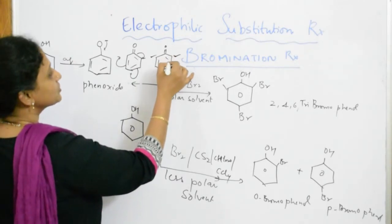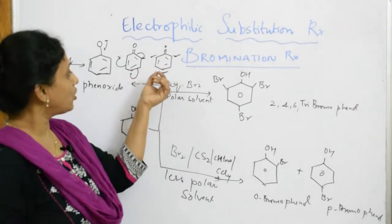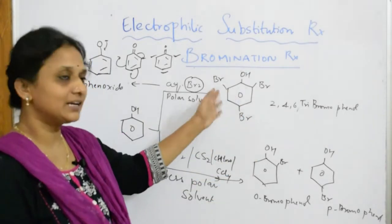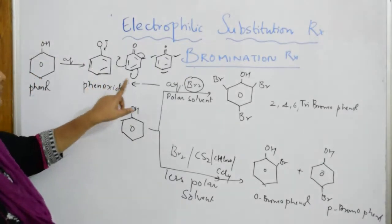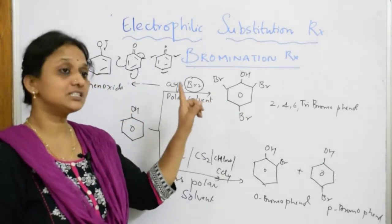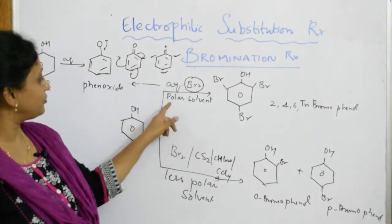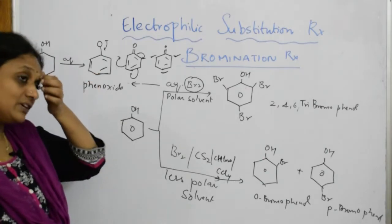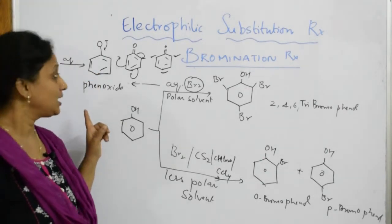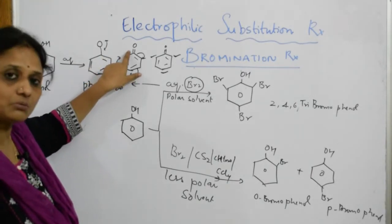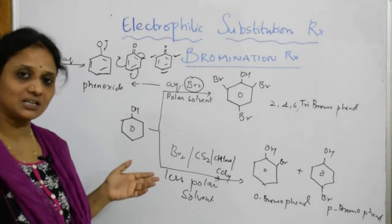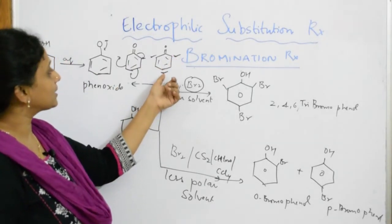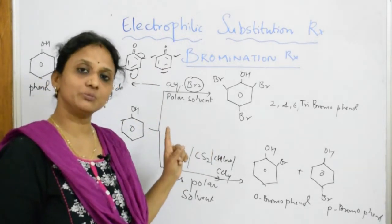Double bond and double bond cannot stay together, so the electrons shift — this shifts, then this shifts. Finally, you get the ortho position, para position, and the other ortho position all opened up due to resonance structures. That is why the incoming electrophile immediately goes and attacks the ortho, para, and ortho positions — giving the 2,4,6-tribromophenol product in aqueous bromine.